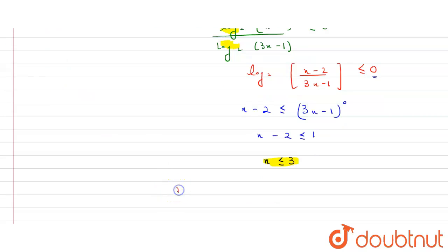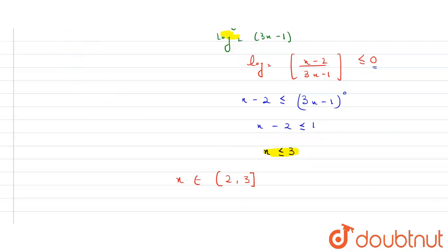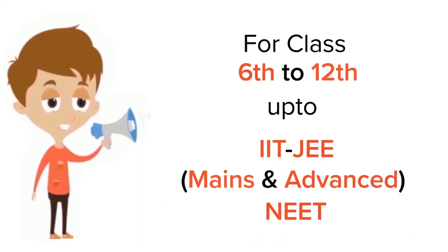So the domain of x is the interval (2, 3], with an open bracket at 2 and a closed bracket at 3, because we have the equal to sign at 3. The domain of x is (2, 3].